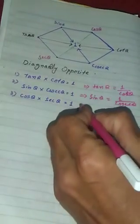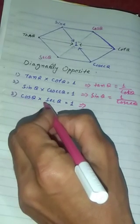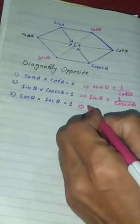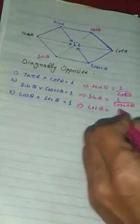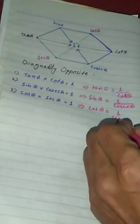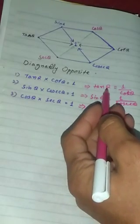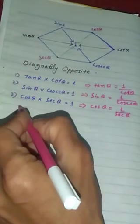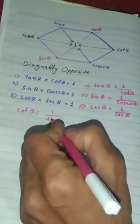If you divide cosine theta multiplied by secant theta is equal to 1, you divide through by secant theta on both sides. This gives: 1 divided by secant theta equals cosine theta, and 1 divided by tangent theta.